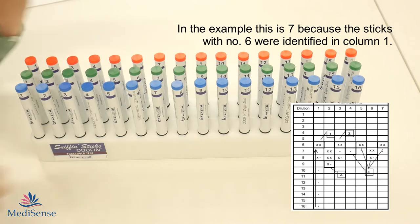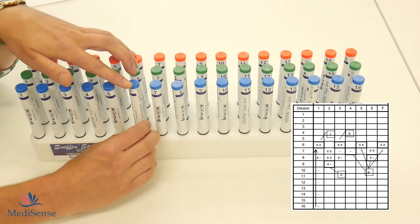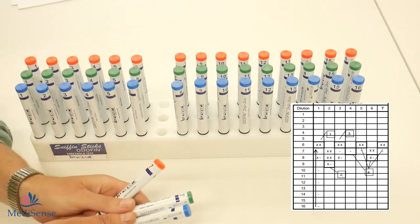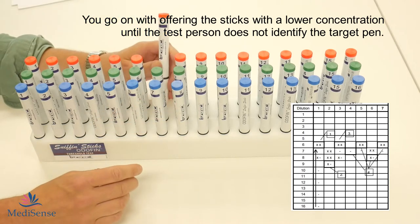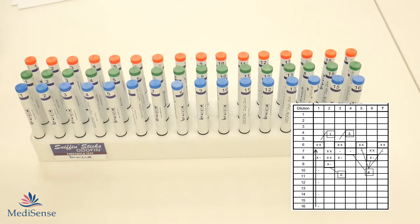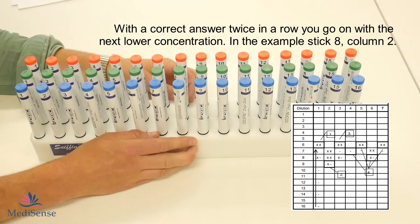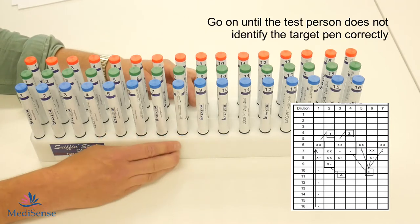So in the first round you have picked number 6. Now you will go to the next lower concentration which is 7. In the example you can see that number 7 was identified correctly. So then you will go up to the next one which is number 8. These were identified twice in a row also. Then you go up to number 9.